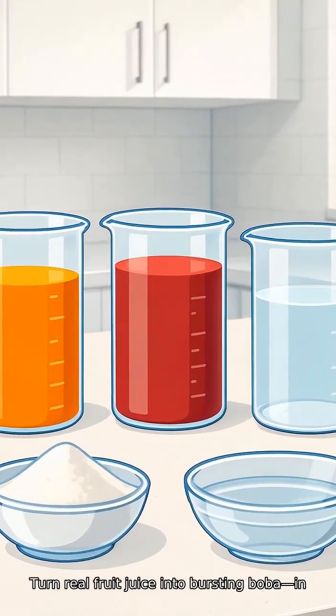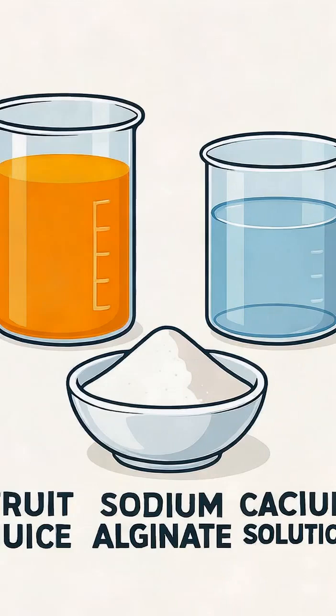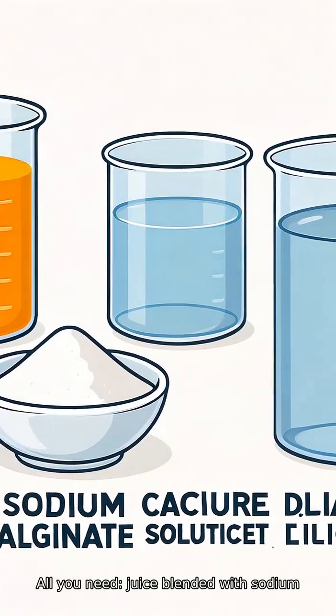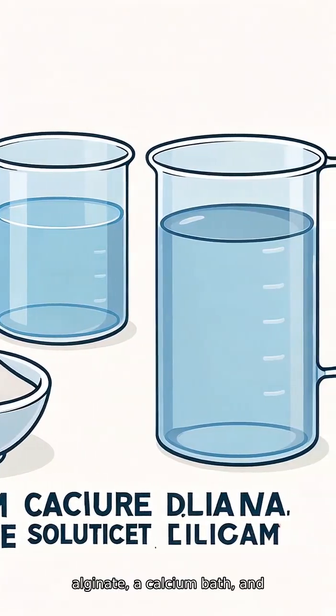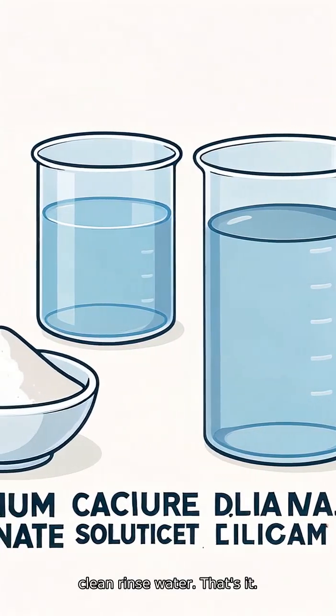Turn real fruit juice into bursting boba in 60 seconds. All you need: juice blended with sodium alginate, a calcium bath, and clean rinse water. That's it.